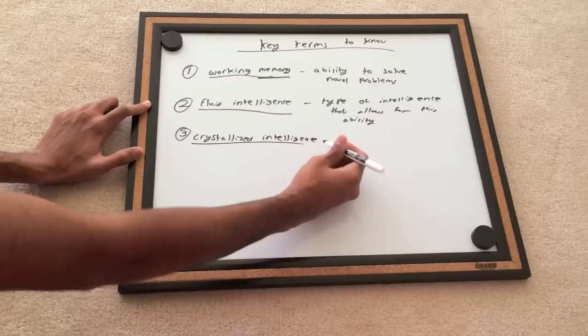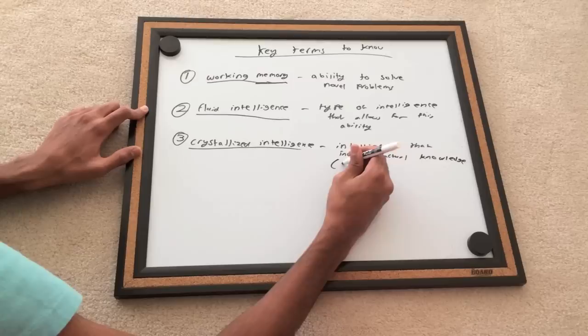Three, crystallized intelligence. The counterpart of fluid intelligence. This deals with factual knowledge, the stuff you use on quizzes like Jeopardy.